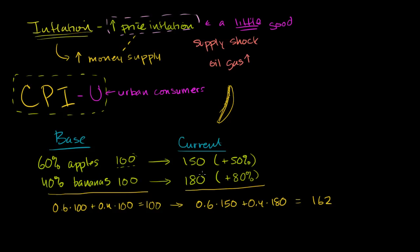162. So our general, if you look at this basket—and this is an overly simplified basket—we have increased from 100 to 162, or you could say this is plus 62%. And you would have gotten the same result if you took the weighted average of the percentages. If you took 0.6 times 50%, plus 0.4 times 80%. In fact, we could do that in our head. 0.6 times 50% is going to be 30%. And then 0.4 times 80% is going to be 32%. 30 plus 32 gives us 62% growth. If for this basket of goods, which we're assuming is for this urban consumer, from our base year to the current year.